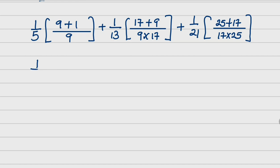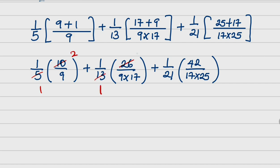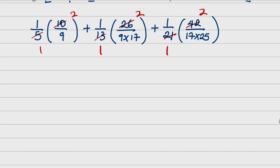So that I am going to have 25 plus 17. Remember, I told you I am avoiding the use of a calculator. Now, this is 1 over 5 into 10 over 9. Then plus 1 over 13 into 26 over 9 times 17. Close the bracket. Plus 1 over 21 into 42 all over 17 times 25. Now we can see that 5 cancels with 10, 13 cancels with 26, 21 cancels with 42. Everything now boils down to 2 over 9 plus 2 over 9 times 17 plus 2 over 17 times 25.